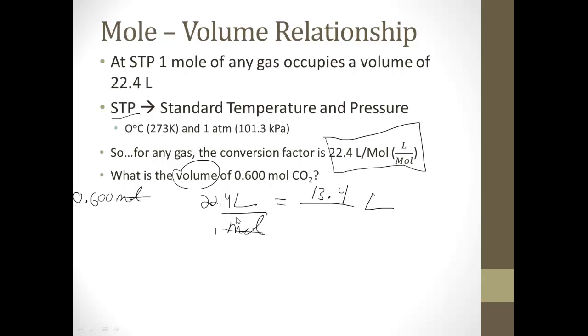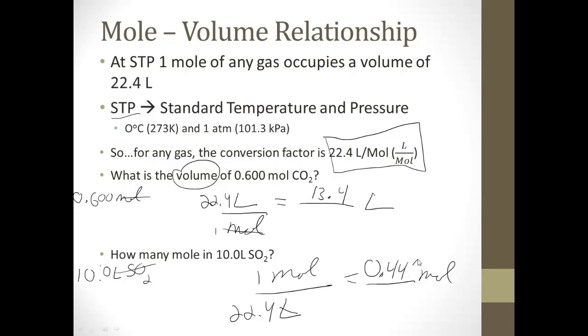All right, let's do another one. How many moles in 10.0 liters SO2. So we have liters. We want to figure out how many moles. So what you want, moles over what you got, liters. And that's 22.4 liters per one mole. Our liters cancel. 10 divided by 22.4, which after we consider significant figures is 0.446.